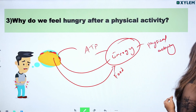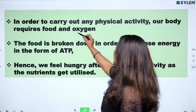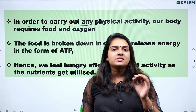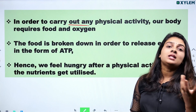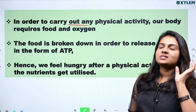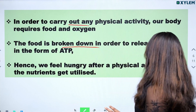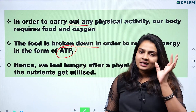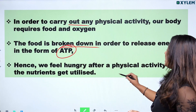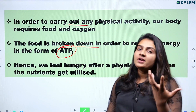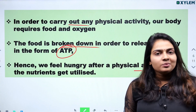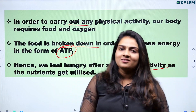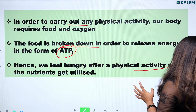So how do we get this? In order to carry out any physical activity, our body requires food and oxygen. We carry oxygen and break down food to produce ATP — Adenosine Triphosphate — our energy formula. That's why when we carry out physical activity, we need to take in nutrients.